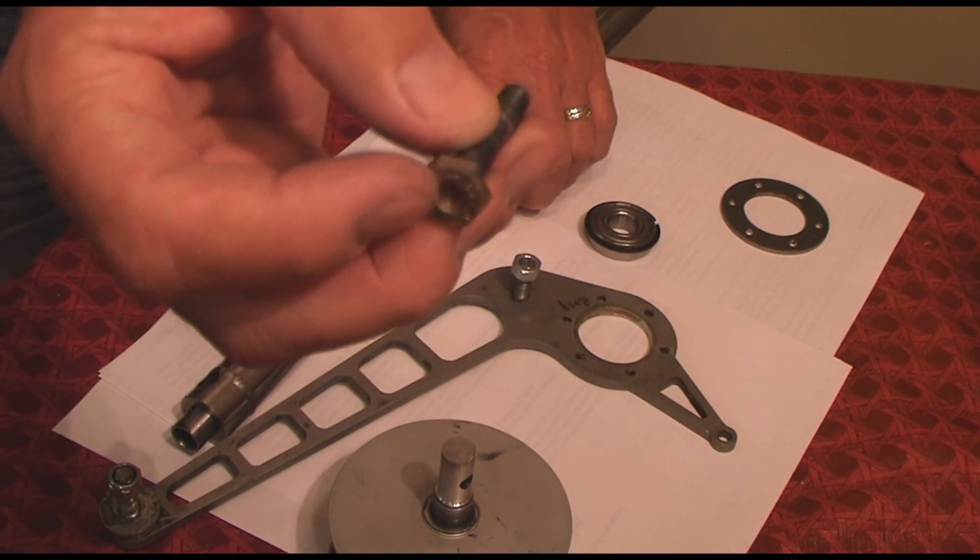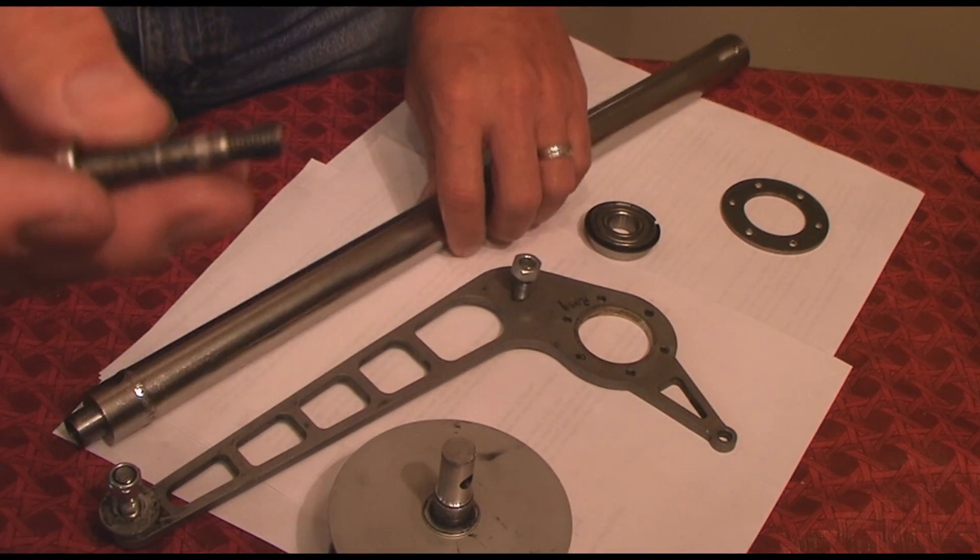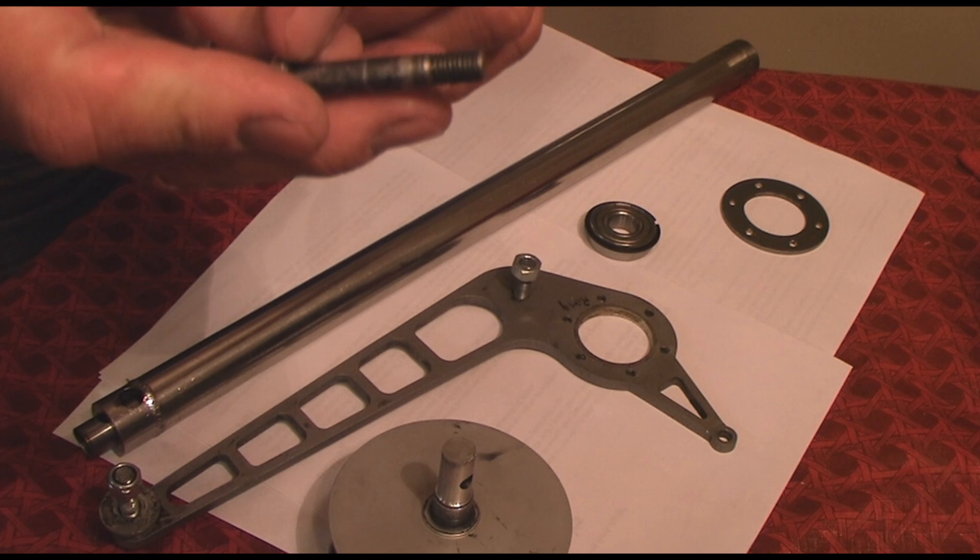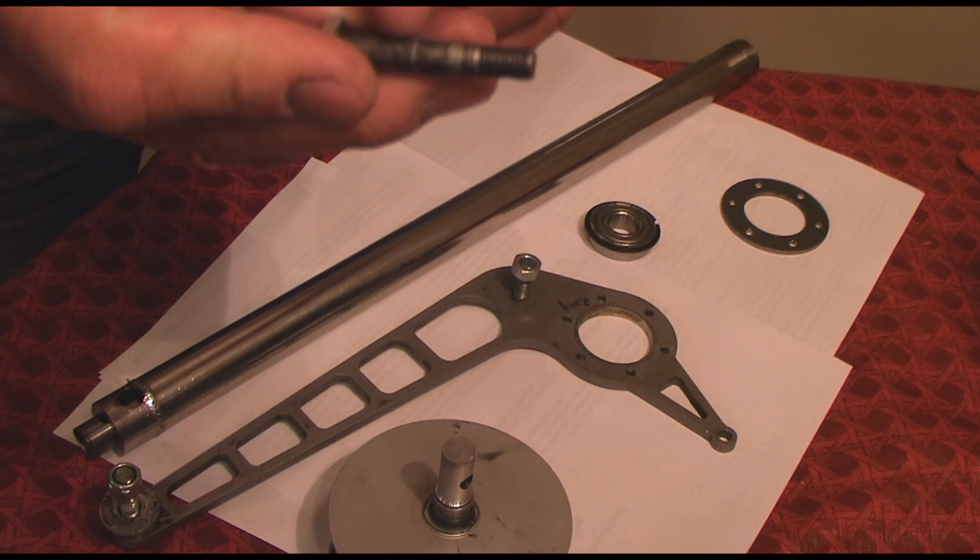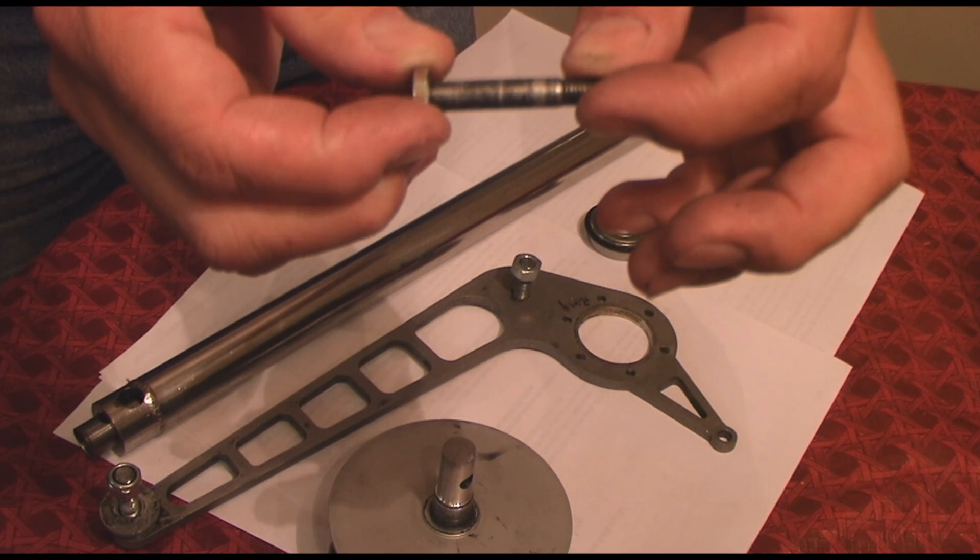The old bolt had a countersunk hex head that went through the larger hole here. The problem is the threads went all the way across, which creates a weak point. When the pre-rotator was engaged with a bit too much RPM, it put too much torque on it.